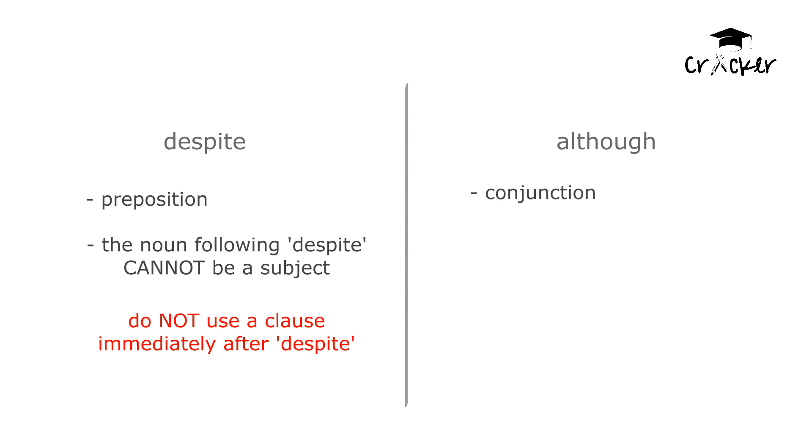The conjunction 'although', on the other hand, serves to combine two simple sentences into one compound. This necessitates the use of at least two different clauses, that is subject-verb pairs, along with this conjunction. In other words, 'although' must be used with a complete subject-verb pair immediately after it.